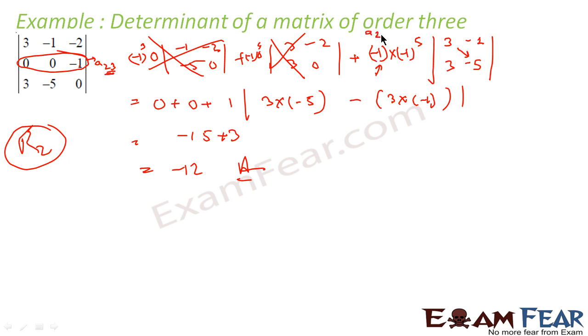This is minus 1 to the power 2 plus 3, and this is the 2 by 2 determinant we got. After removing these elements: 3, minus 1, 3, minus 5. We got this valid determinant by multiplying diagonals and subtracting the remaining numbers, and I got the value as minus 12.